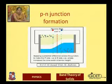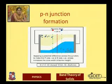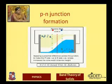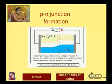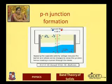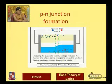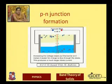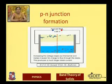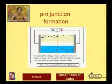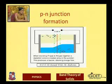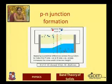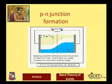In reverse bias, the external battery positive is joined to the n-type material and negative to the p-type material. The applied voltage increases the width of the junction barrier, also called the barrier potential, which blocks charge flow and results in only a very small current in the outer circuit.